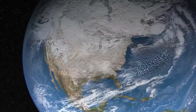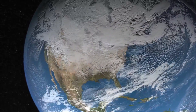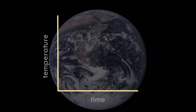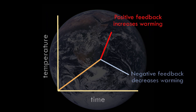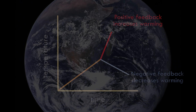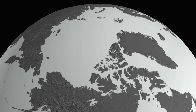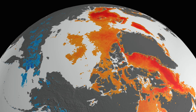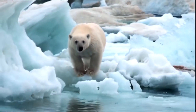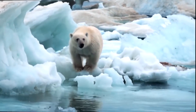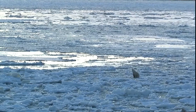Feedbacks are a key concept to understand in the climate system. Feedbacks can be positive and negative. A positive feedback occurs when factors further increase that warming. A negative feedback, on the other hand, occurs when factors reduce that warming. We are particularly interested in Arctic feedbacks because over the last three decades, the Arctic has warmed three times more than the global mean. The surface albedo feedback is a positive feedback that further increases Arctic warming and sea ice loss.